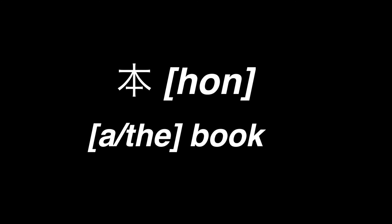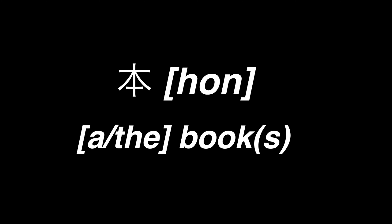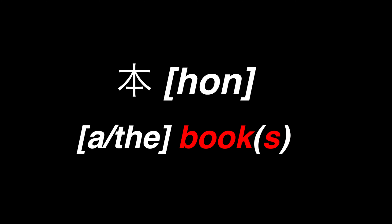So what's Japanese grammar like? Let's start with nouns. Nouns in Japanese aren't marked for definiteness, gender, or number. That means the word hon can mean book, a book, the book, books, or the books.